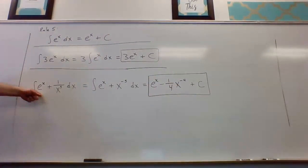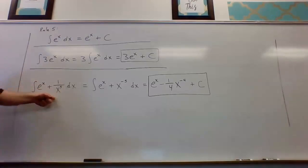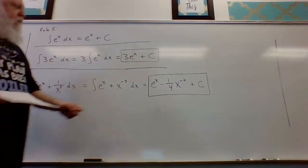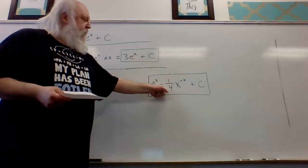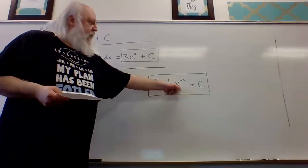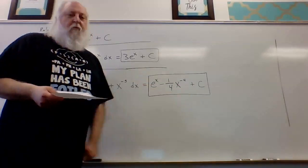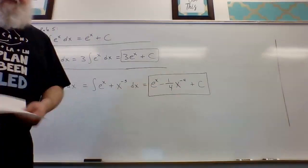So the antiderivative of e to the x plus one over x to the fifth is e to the x minus one-fourth x to the minus four plus c.